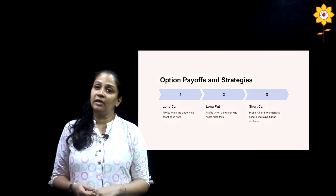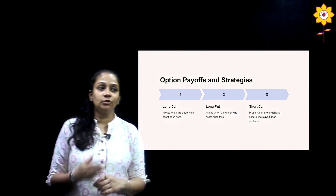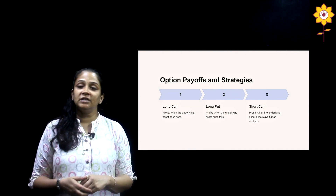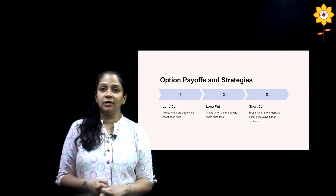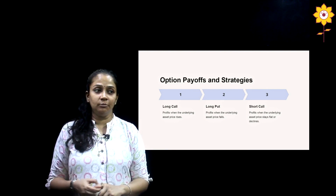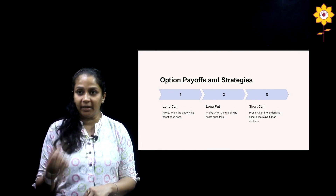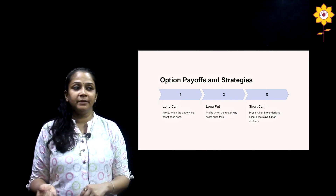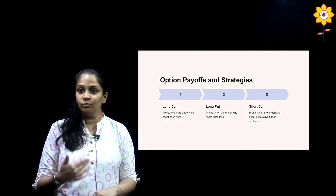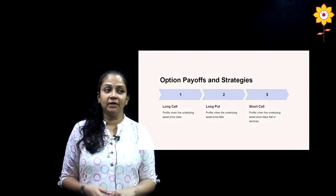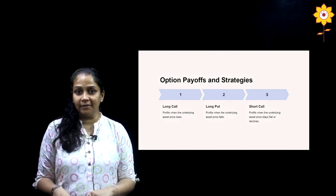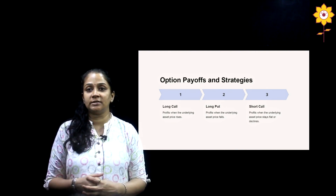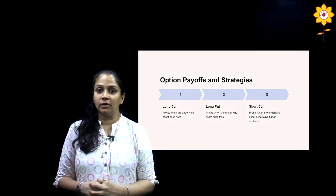Option payoffs and strategies: options are traded with three different positions. Long call — taking positions for a longer period related to buying; profits are made when underlying asset prices increase. Long put — related to sales; profits are made when underlying asset prices fall. Short call — profits can be made when underlying asset prices stay flat or decline. These three option strategies are basically utilized to maximize profits in option trading.